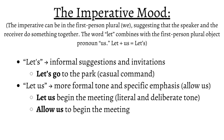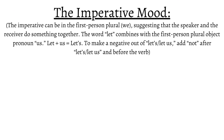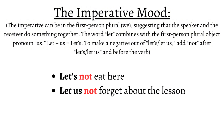'Let us begin the meeting' has a more literal and deliberate tone — we can think of it as 'allow us to begin the meeting.' To make a negative out of 'let's' or 'let us,' we add the negative 'not' after 'let's' or 'let us' and before the verb: 'Let's not eat here.' 'Let us not forget about the lesson.'